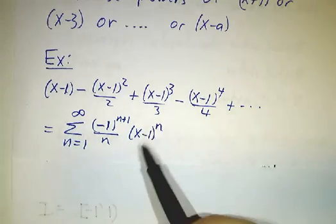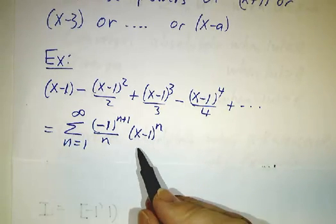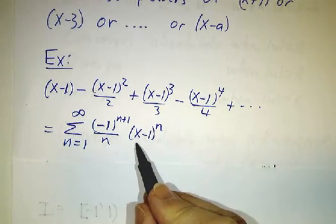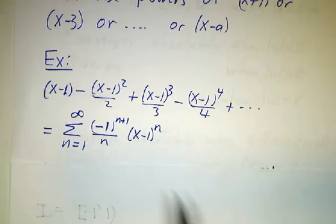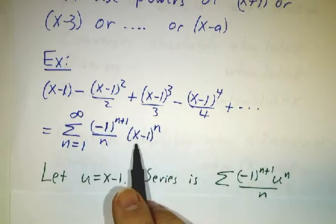Now, the way to understand that, since we know how to find radii of convergence for powers of x, is to define a new variable, let's call it u, which is just x minus 1.